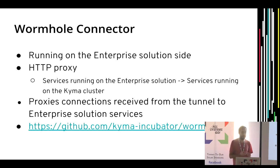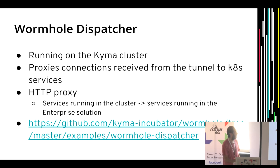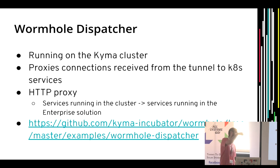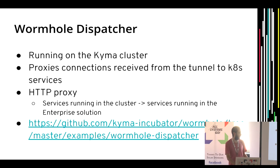There are two components. One is the wormhole connector proper, running on the enterprise solution side — it's a basic HTTP proxy, so services can talk to the Kyma cluster just by setting proxy variables. All connections from enterprise services go through the tunnel to the Kubernetes cluster. The other component runs on the actual Kubernetes cluster and proxies received connections from the tunnel to services inside. It also works the other way around. This project was more of a proof of concept, so don't expect finalized software.